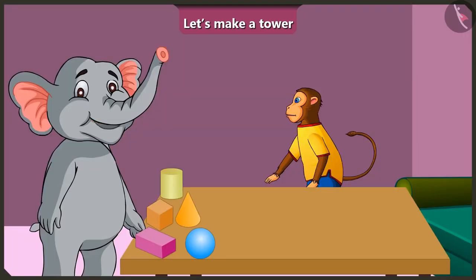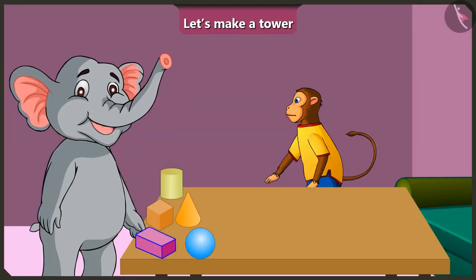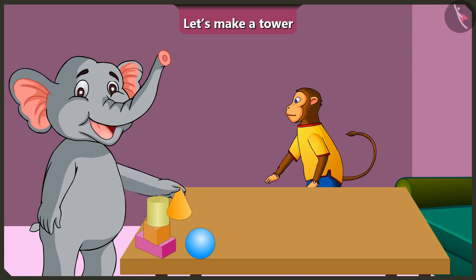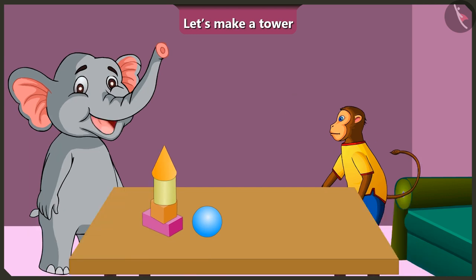Now I understood, I will make it again, this cuboid at the bottom, above it the cube, above it this cylinder and above it this cone-shape. See, the tower is made. Now I understood that we cannot make a tower using round objects and that cone-shaped objects should only be placed on top of the tower.